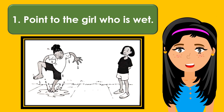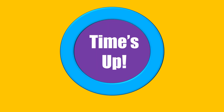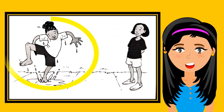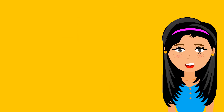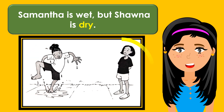Point to the girl who is wet. Samantha is wet, but Shauna is blank. The missing word is dry. Samantha is wet, but Shauna is dry.